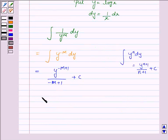Now we substitute the value of y here. y is log x. So this becomes log x to the power 1 minus m upon 1 minus m plus c.